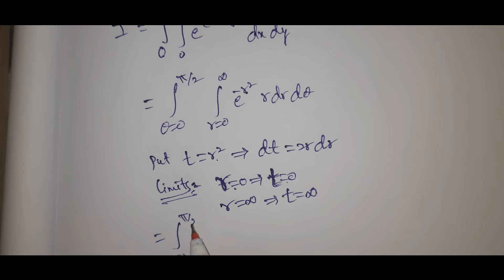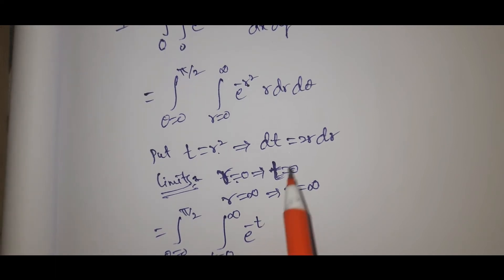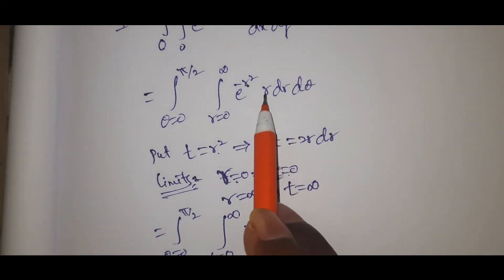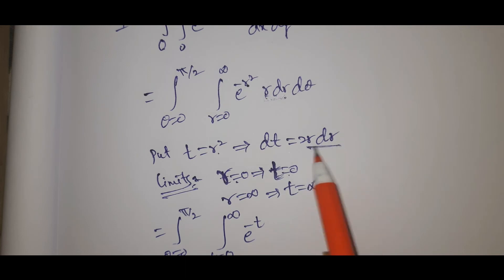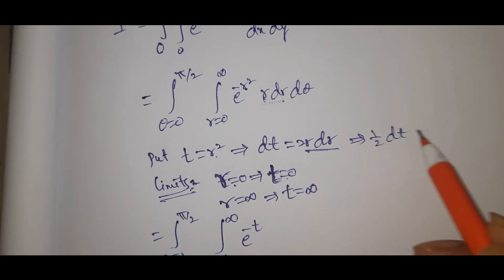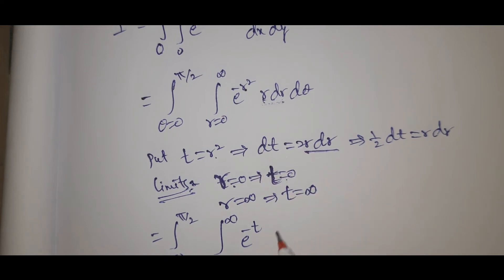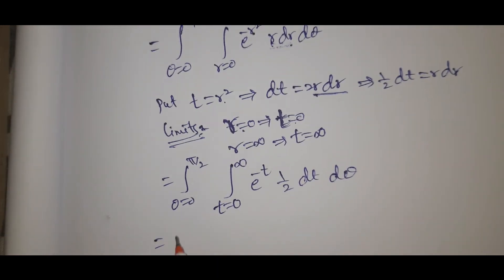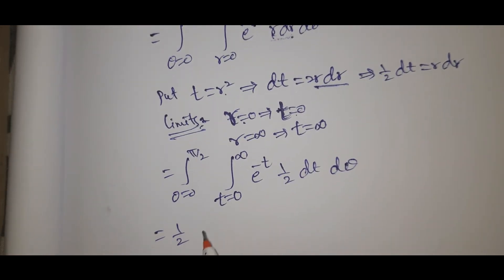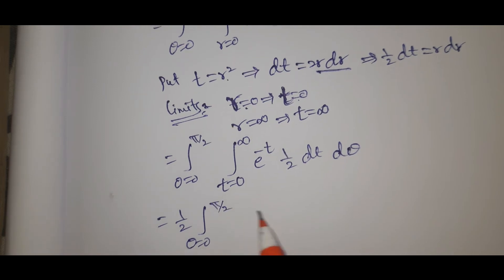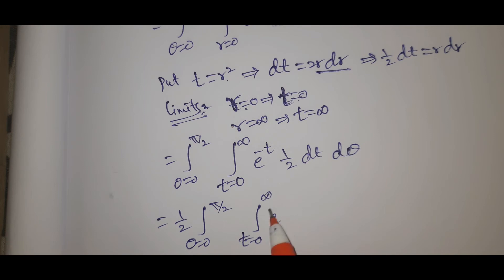So I equals 1 by 2, integral theta equal to 0 to pi by 2 d theta, integral t equal to 0 to infinity, e power minus t dt. That equals 1 by 2, integral theta equal to 0 to pi by 2, the integral of e power minus t gives e power minus t by minus 1, evaluated from 0 to infinity. This gives e power minus infinity by minus 1, minus e power minus 0 by minus 1.